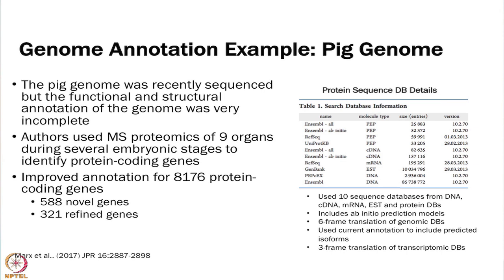A recent example of this type of method was the pig genome. In 2017, a paper came out where the pig genome had been recently sequenced but the annotation was not complete. They used mass spec on nine organs during different stages of development and were able to improve the annotation for over 8,000 protein-coding genes. They used all sorts of sequence databases, prediction models, six-frame translations, and transcriptome data — a really nice example of using these approaches together for annotation.